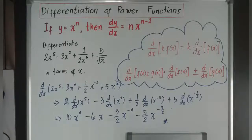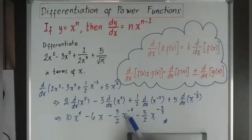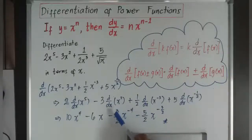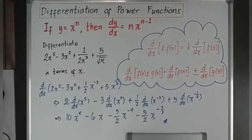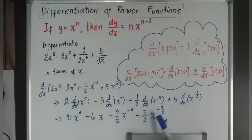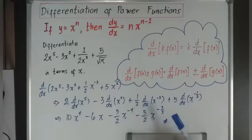This is already your answer. If you want to make it more readable, you can bring down x to the power of negative 4, giving 3 over 2x to the power of 4, and bring down x to the power of negative 3 over 2, giving negative 5 over 2 times the square root of x to the power of 3.